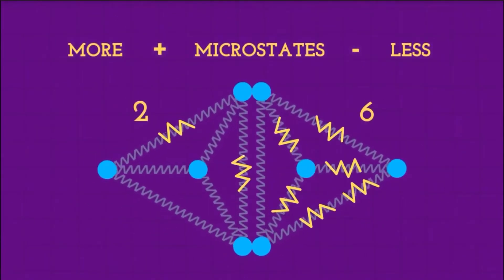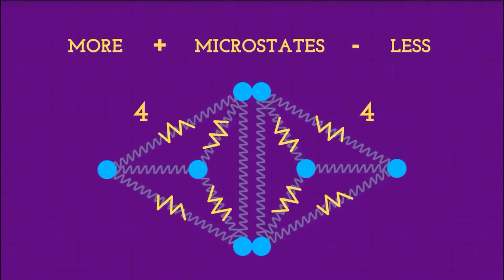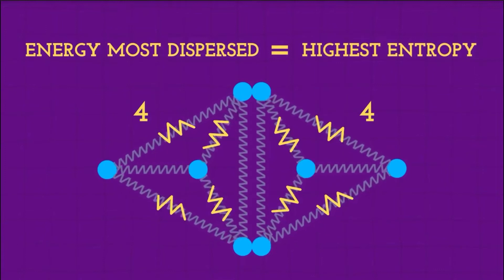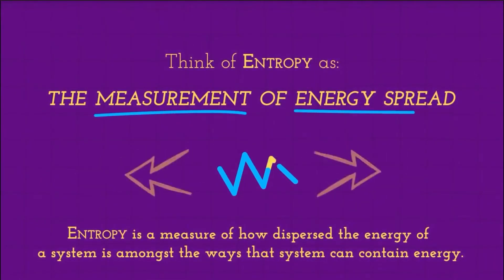If a single configuration has more microstates, then there's a higher probability of it occurring. Within these arrangements, the configuration with the energy most dispersed has the highest entropy. So think of entropy as the measurement of energy spread.